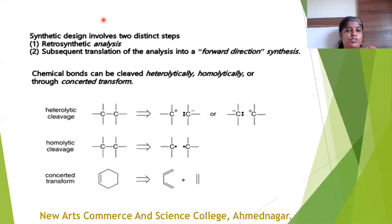The disconnection can be done in different ways. Either we can disconnect a bond in a heterolytic way — if you disconnect the bond in one direction, one carbon carries a negative charge and the other carries a positive charge, and this is called heterolytic disconnection. In homolytic disconnection, one electron goes to one carbon and the other electron goes to the other carbon.